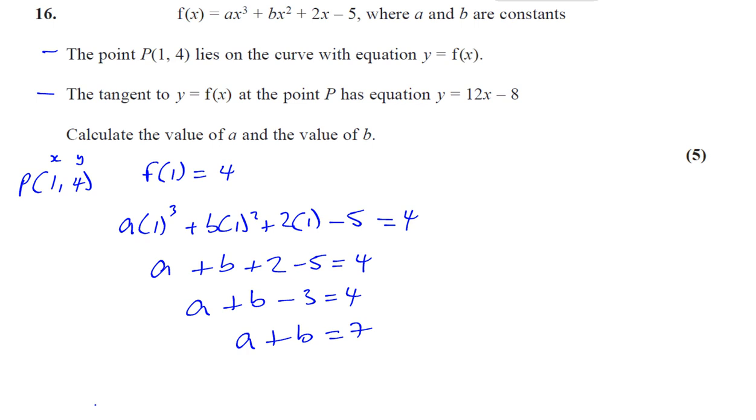The second piece of information they told us is that the tangent to f(x) at the point P has this equation. So if the tangent to the curve has this equation, that means the gradient of f(x), when x is equal to 1, the gradient of f(x) is going to be 12.